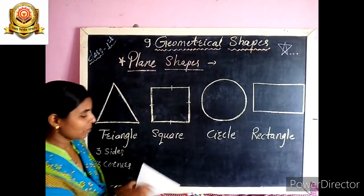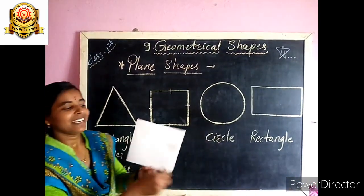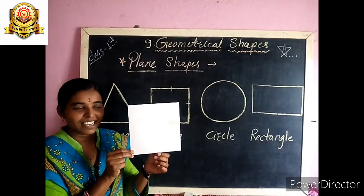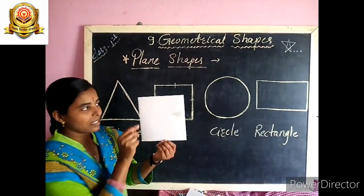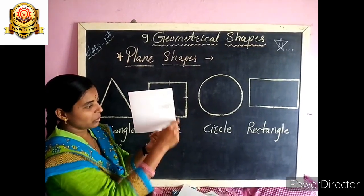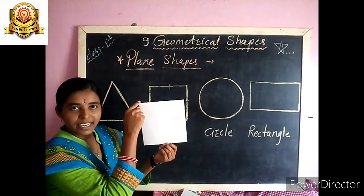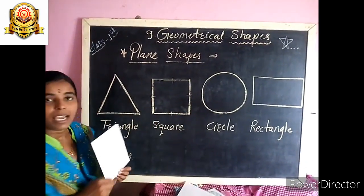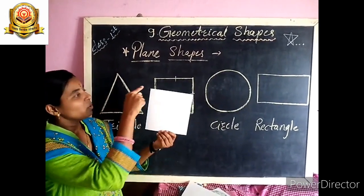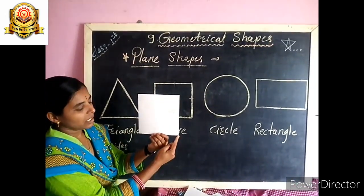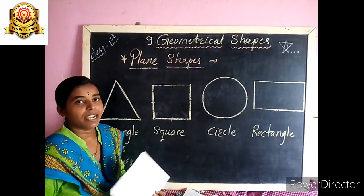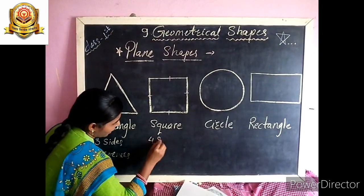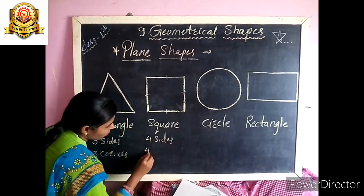Our next shape — tell me, what is this? Yes, this is a square. A square has how many sides? Count: 1, 2, 3, and 4 sides. Square has 4 sides. And how many corners? 1, 2, 3, and 4 corners. Square has 4 sides and 4 corners.